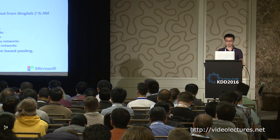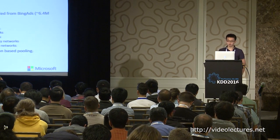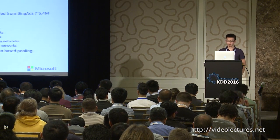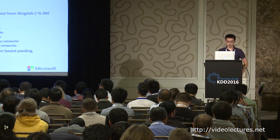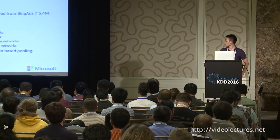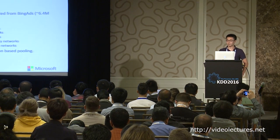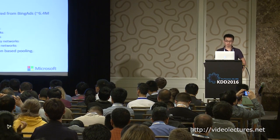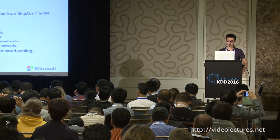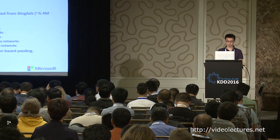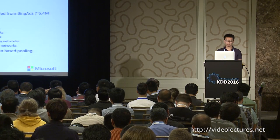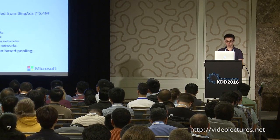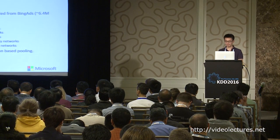Here is the experiment setting we used. We sampled about 50 million click logs from Bing Ads, consisting of about 6 million queries and 5 million ads. The models we compare include bag-of-words baselines which don't consider word order, and four different RNN variants: one-directional RNN, bidirectional RNN, one-directional LSTM, and bidirectional LSTM. We also tried different pooling methods: max pooling, last pooling, and attention-based pooling.